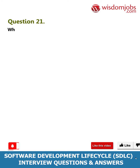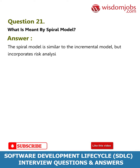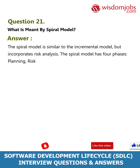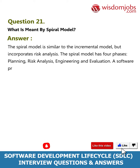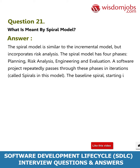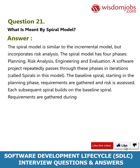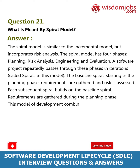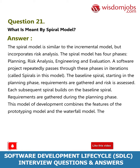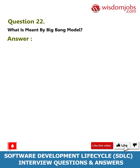Question 21: What is meant by spiral model? Answer: The spiral model is similar to the incremental model but incorporates risk analysis. The spiral model has four phases: planning, risk analysis, engineering, and evaluation. A software project repeatedly passes through these phases in iterations called spirals. In the baseline spiral, starting in the planning phase, requirements are gathered and risk is assessed. Each subsequent spiral builds on the baseline spiral. This model combines the features of the prototyping model and the waterfall model, and is intended for large, expensive, and complicated projects.